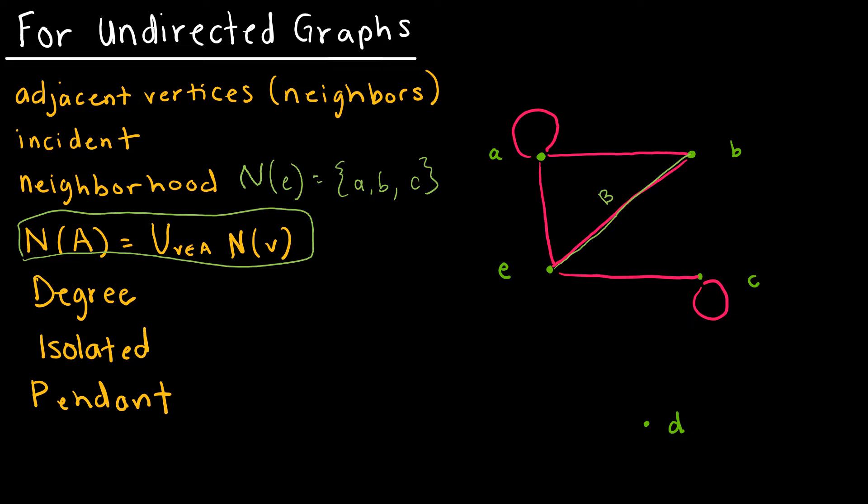That brings us to degree. The degree for an undirected graph is essentially the sum of the number of ins and outs, so the number of vertices connected to that particular vertex, so the number of edges connected to the vertex. So for A, notice we'd have 1, 2, 3, 4, so the degree of A would be 4. So even though that loop is just really a line connecting itself, we do have to count it twice.